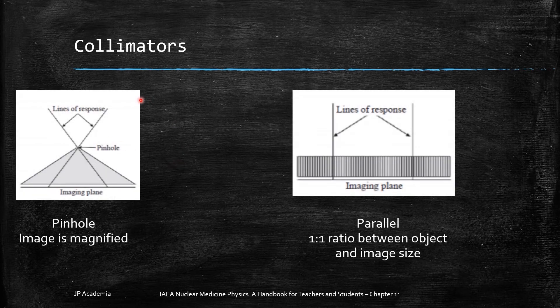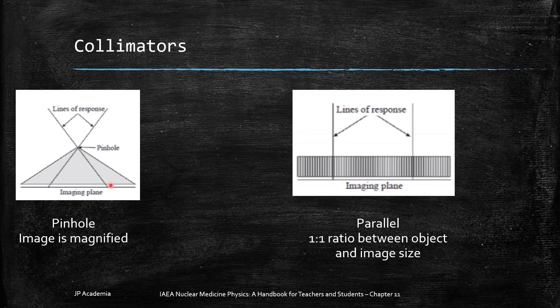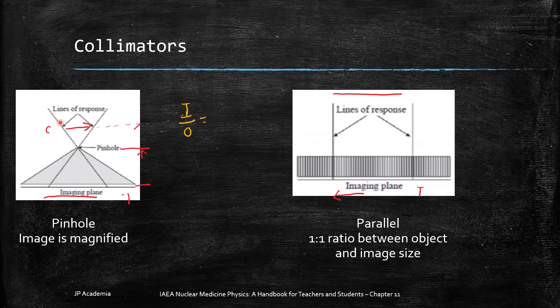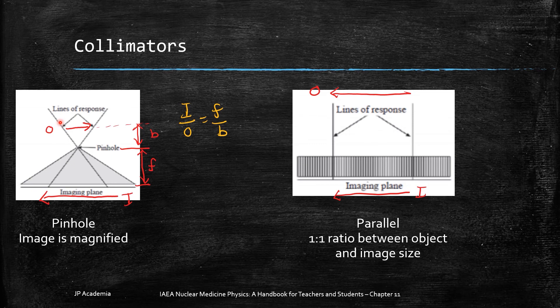First, we have the pinhole collimator. Then we have the parallel collimator. For the pinhole, the focal point is placed between the image plane and the object being imaged. We can define the image size I over the object size O, which is equal to the distance F over B. The distance F is the distance from the pinhole to the image plane and B is the distance from the object to the pinhole.